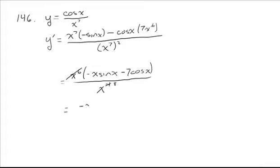And so our simplified derivative is negative x sine x minus 7 cosine x, all over x to the 8th.